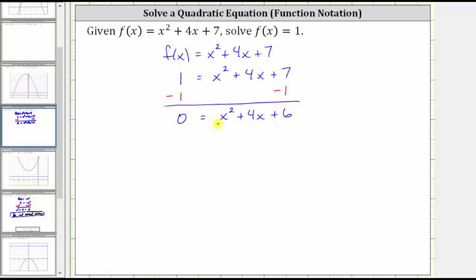And now to solve by factoring, if the right side does factor, it will factor into two binomial factors. And because the first term is x squared, and x squared is equal to x times x, we have a factor of x in the first position of both binomials.